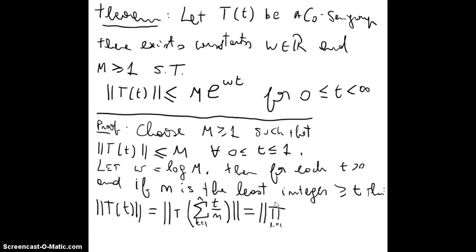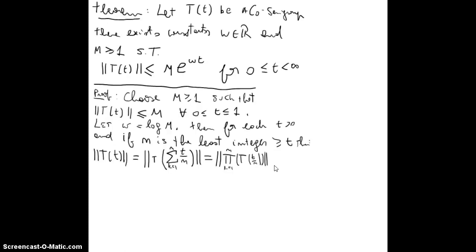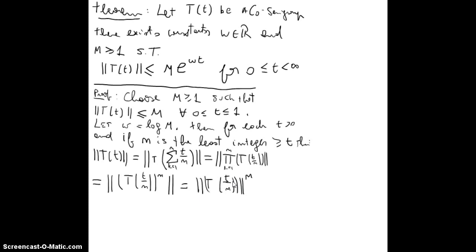By the semigroup property, the product from k=1 to n of T(t/n) has norm equal to the norm of T(t/n) to the n. Since n is greater than t, t/n is between 0 and 1, so this can be bounded by M. Therefore this is less than or equal to M^n.